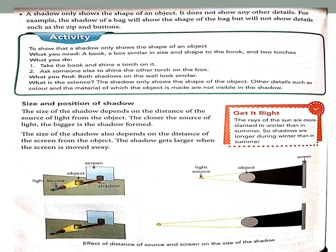If you take a bag, its shadow will give you only the bag shape. You will not see whether it has a zip, buttons, or anything else. It will show only the shape of an object.